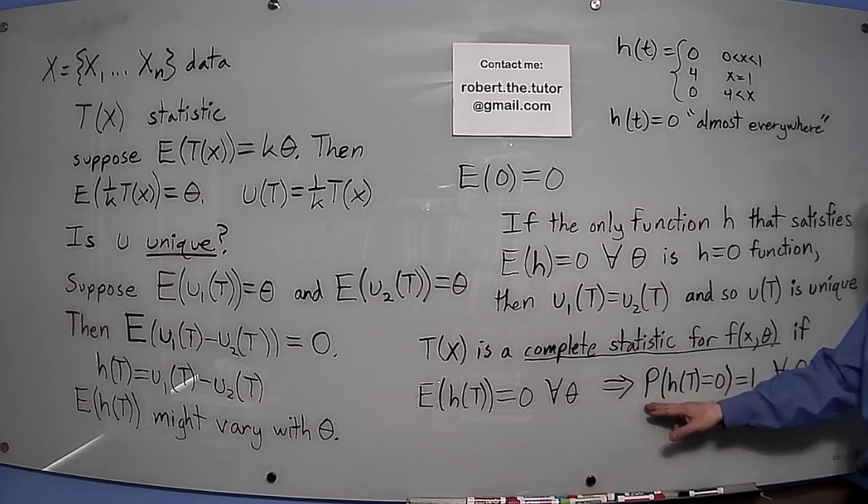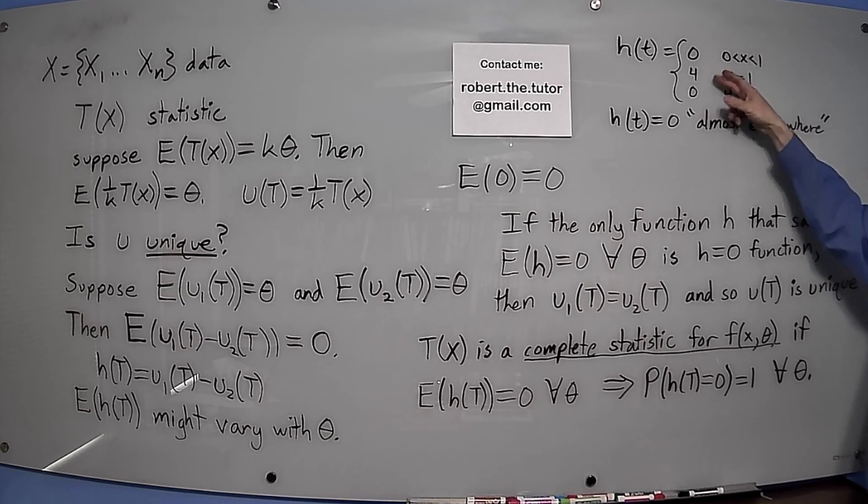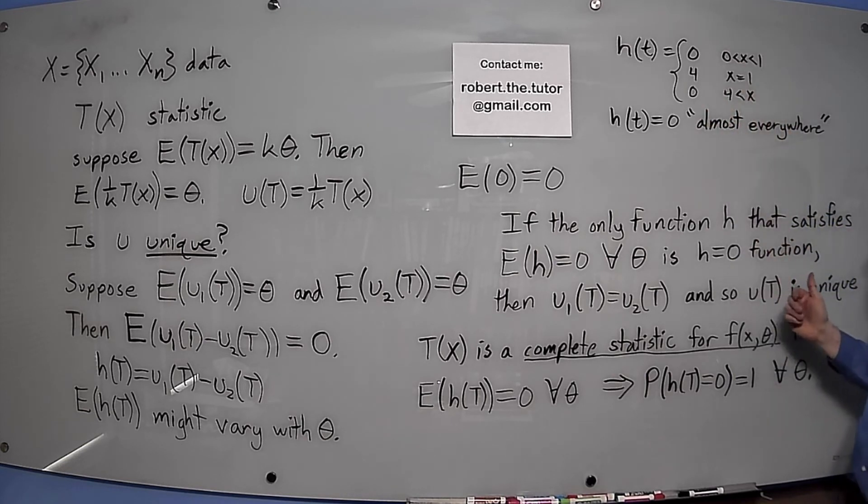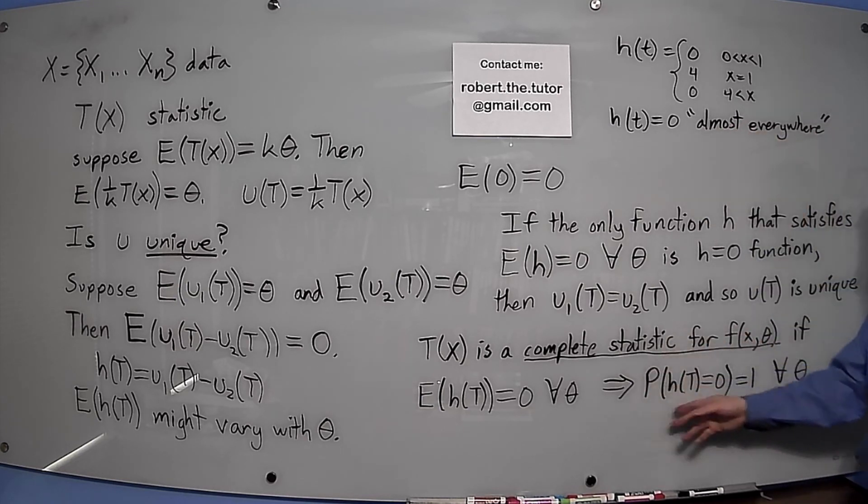They're saying probability of that being 0 is 1 to account for cases like this, where you have a function that is 0 except at 1 or a small number of points. So h(T) is 0 almost everywhere. That means the probability that h is 0 would be 1. So that's why they're making that distinction instead of just saying h(T) equals 0. They're allowing for exceptional points.